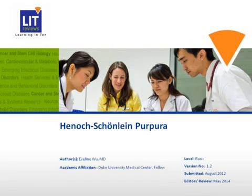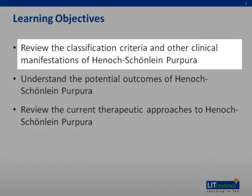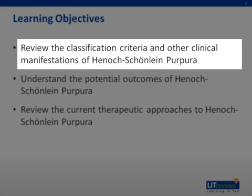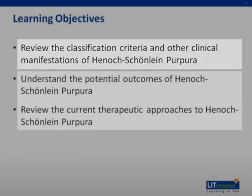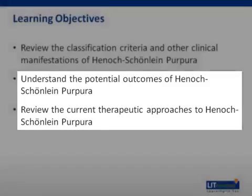Henoch-Schönlein Purpura. The primary objectives are to review the classification criteria and other clinical manifestations of Henoch-Schönlein Purpura, as well as to review its current therapeutic options and potential outcomes.